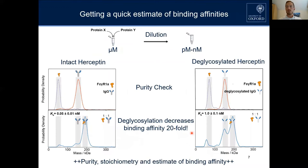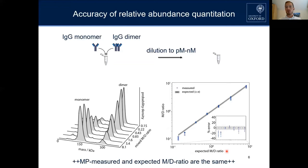This plot shows the expected monomer-dimer ratio from UV measurements versus our experimentally determined mass photometry monomer-dimer ratio. There is a strong linear correlation, and the relative errors are really small. This made us very confident that we are actually able to measure these ratios accurately and that they are representative of the in-solution distribution.